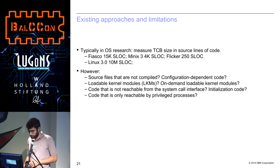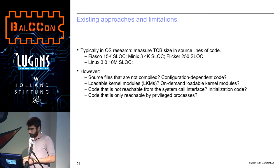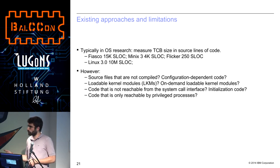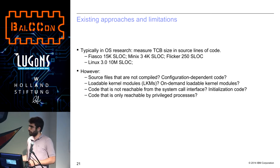First, we need to define what the attack surface is. In operating systems research, typically people will talk about TCB — Trusted Computing Base — and measure the TCB size in terms of lines of code. What that will often mean is people will go into the source code repository, run a tool such as SlocCount to measure all the lines of code within the repository, and say, for instance, that the Fiasco microkernel has 15,000 lines of code, that MINIX3 has 4,000 lines of code. When you compare that to Linux 3.0, which has 10 million lines of code, there is really an orders of magnitude difference.